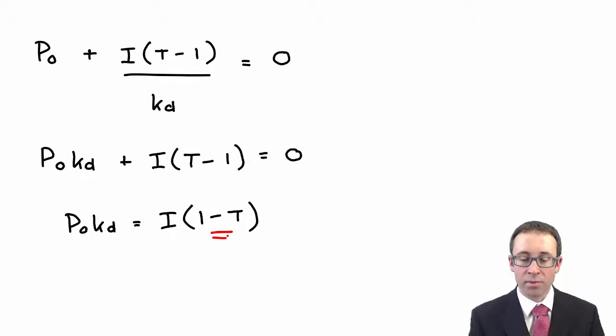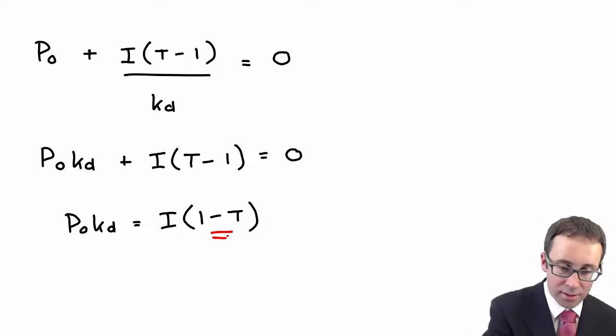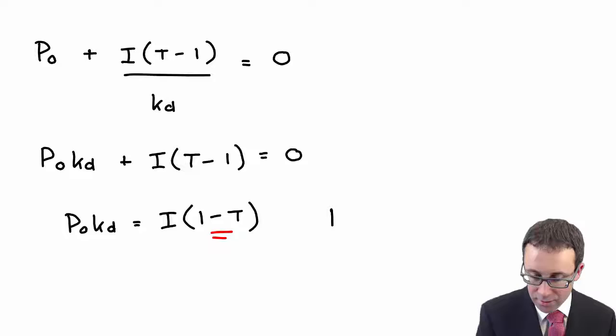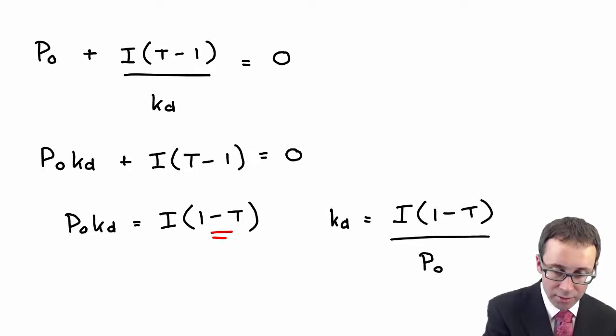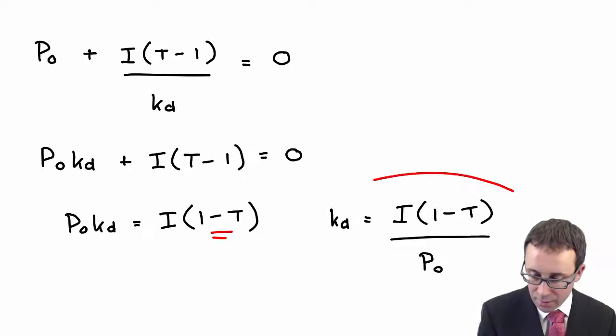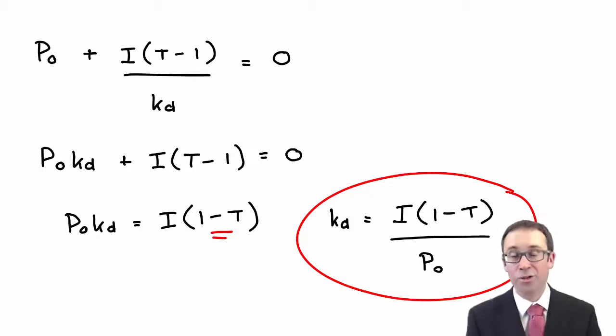So you have there the interest multiplied by one less the tax rate. And then based upon that, the cost of debt is the interest multiplied by one less the tax rate divided by the price. So there you go. That's your formula. That's where it comes from. You don't need to derive that within the exam. It's just a demonstration to see that these formulae actually come from somewhere.